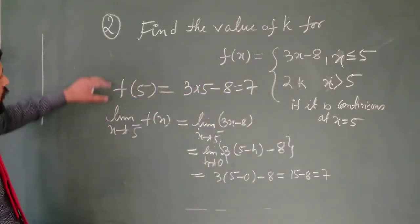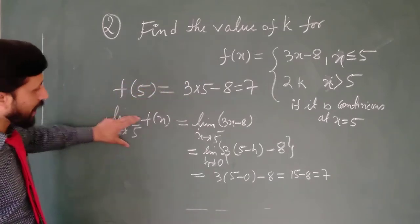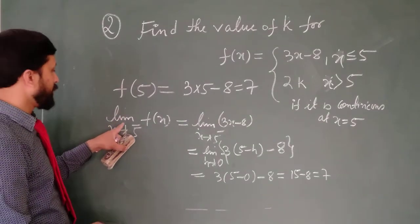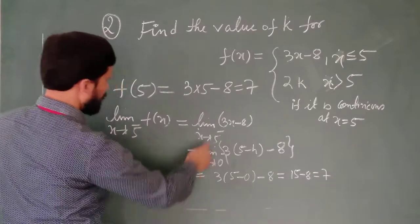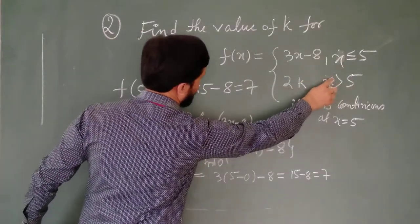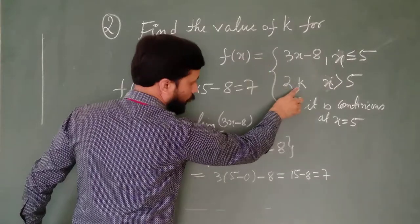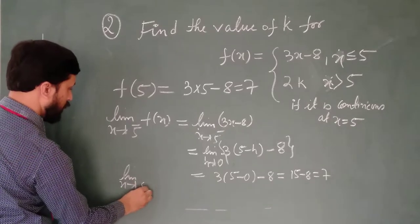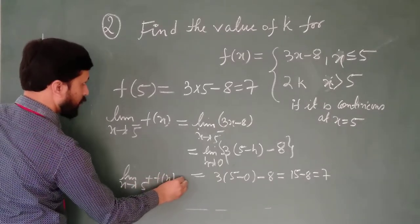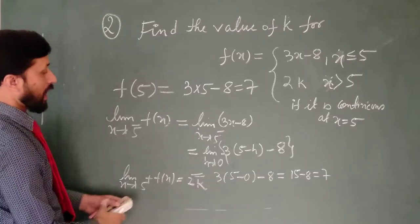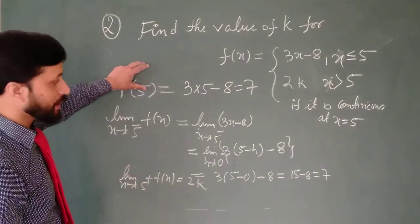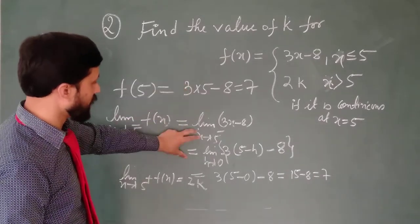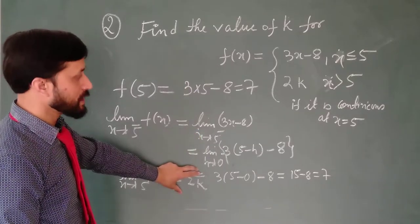Thus, what we got: functional value is 7, left hand limit value is also 7. Now we will calculate the limit from the right hand side. It is already given, so no need to calculate. Because when x is greater than 5, f(x) is equal to 2k, so we can directly write: limit x tends to 5 plus, f(x) equals 2k. Since the function is continuous, this value, this value, and this value must all be the same.